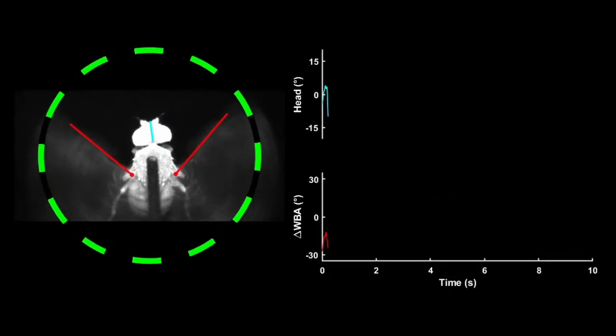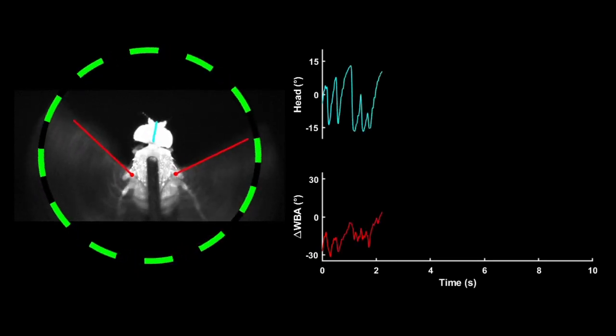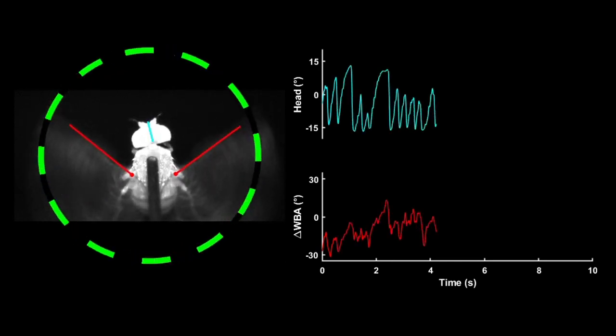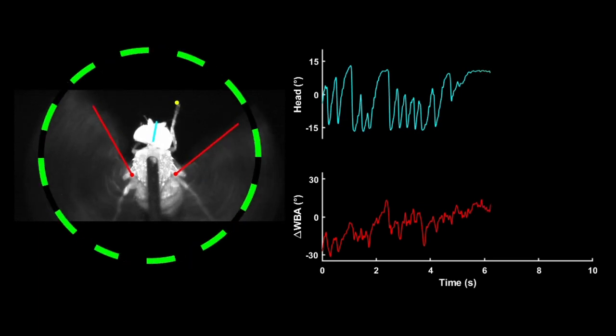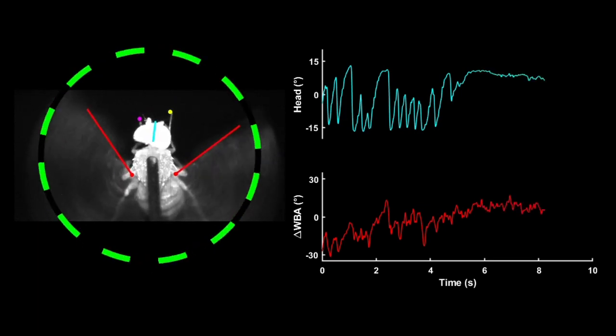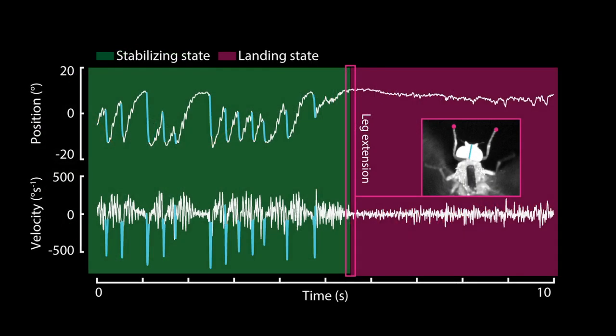We also found that flies would rarely perform head reset saccades when extending their legs, which indicates that flies were attempting a landing maneuver. This data suggests that head movements are gated by behavioral state. This is clearly shown by comparing the head response as flies begin to extend their legs, highlighted in the red area.